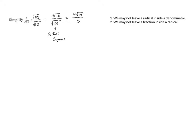And then there's one more thing we can do here. The 4 and the 10 are both divisible by 2, so we can reduce them by 2. 4 tenths becomes 2 fifths. So the numerator is 2 root 10, and the denominator is 5, and this is our final answer. We no longer have a radical in the denominator — the denominator is a whole number, and we don't have any fractions inside of radicals, so we are good to go.